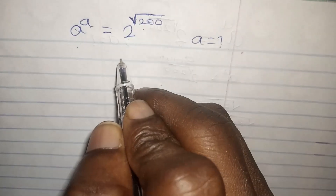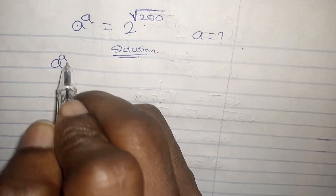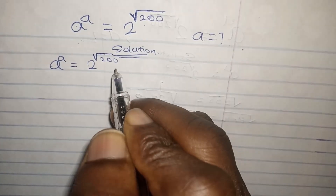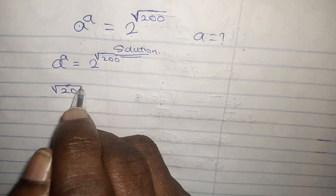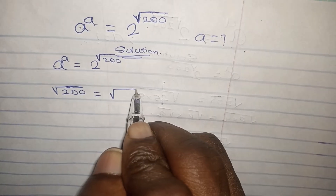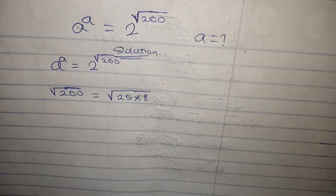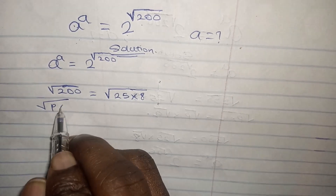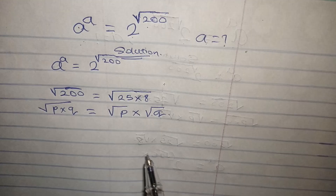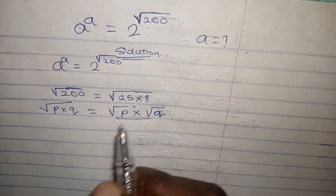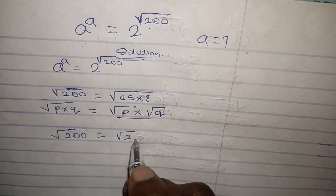Solution: we write our equation, which is a to the power of a equals 2 to the power of root of 200. Recall that root of 200 is also equal to root of 25 times 8. According to the product of radicals rule, root of p times q equals root of p times root of q. So root of 200 equals root of 25 times root of 8.